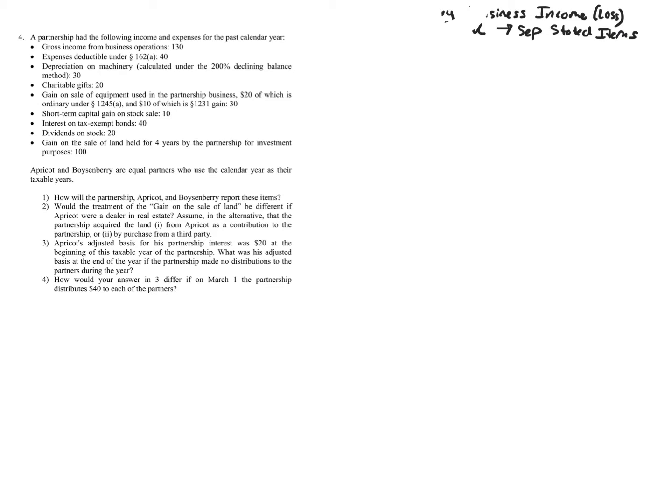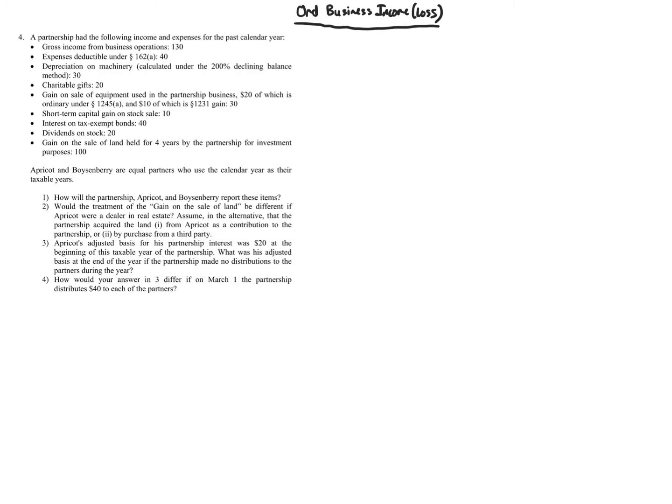If an item has some type of limitation or is determined a specific way for a particular partner, it's separately stated. We'll set up a chart with three columns: Ordinary Business Income or Loss (items lumped together), Separately Stated items, and Non-taxable items — such as tax-exempt interest income, which still needs to be separately reported.